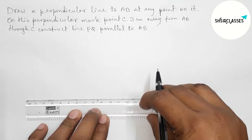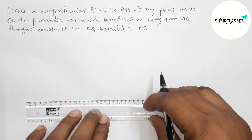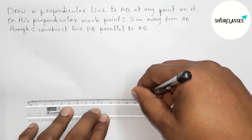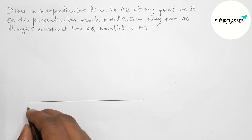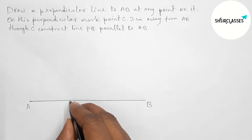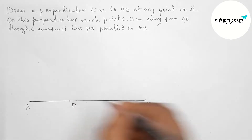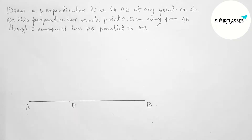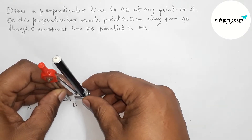First of all, let us draw a line segment of any length, taking point A here and point B here. Next, take any point on the line AB — taking point D here. Now using the compass.